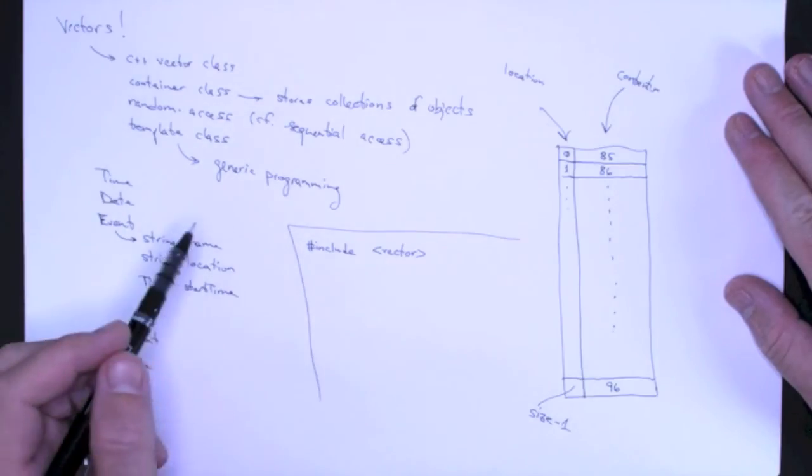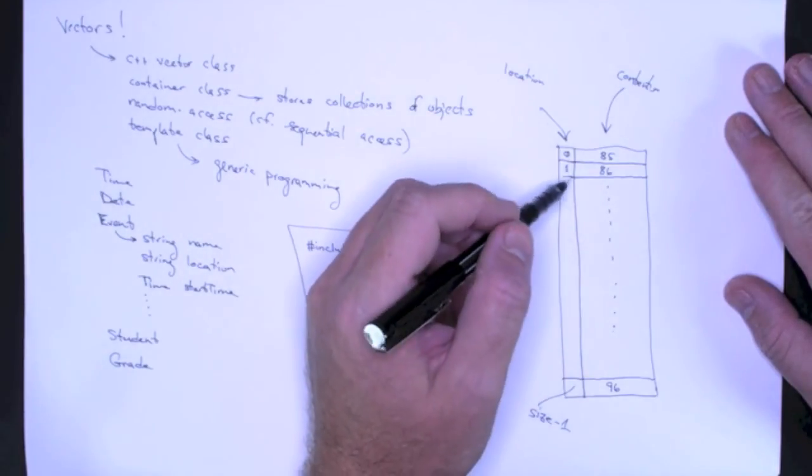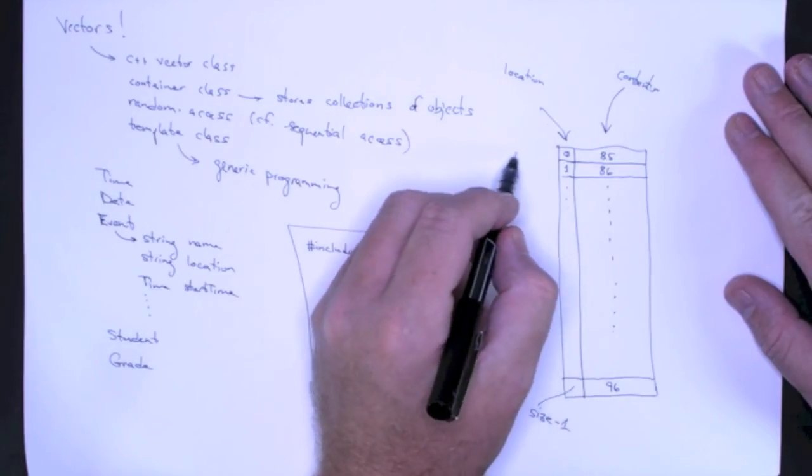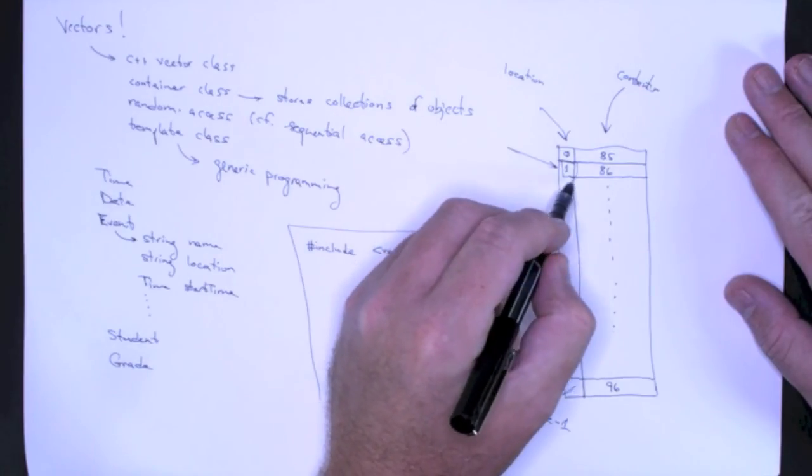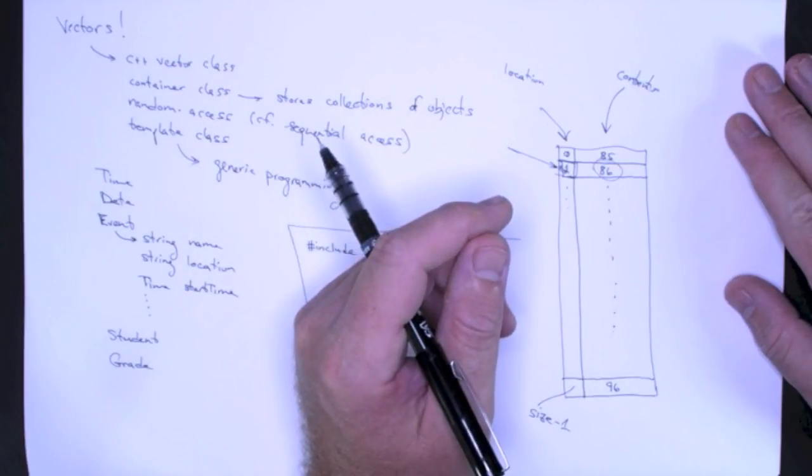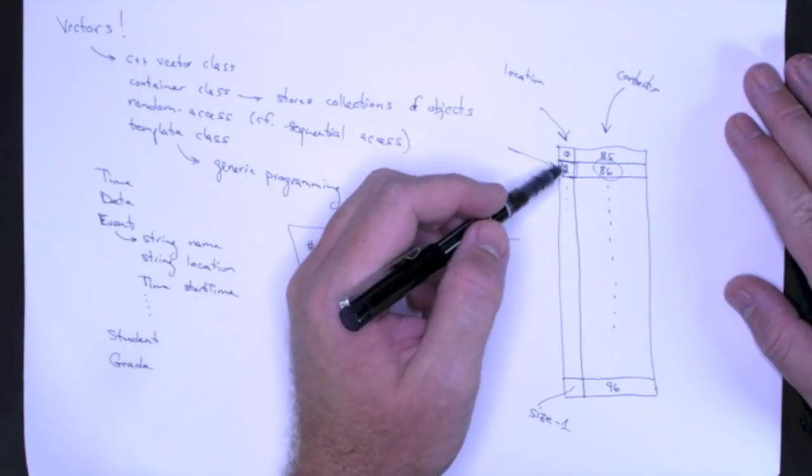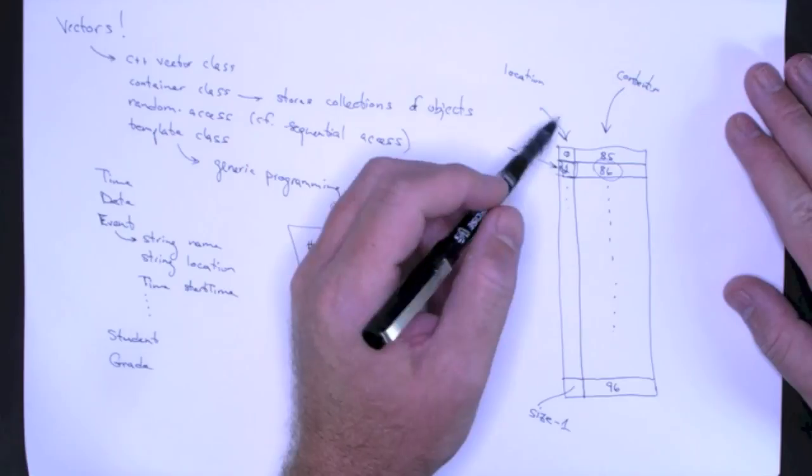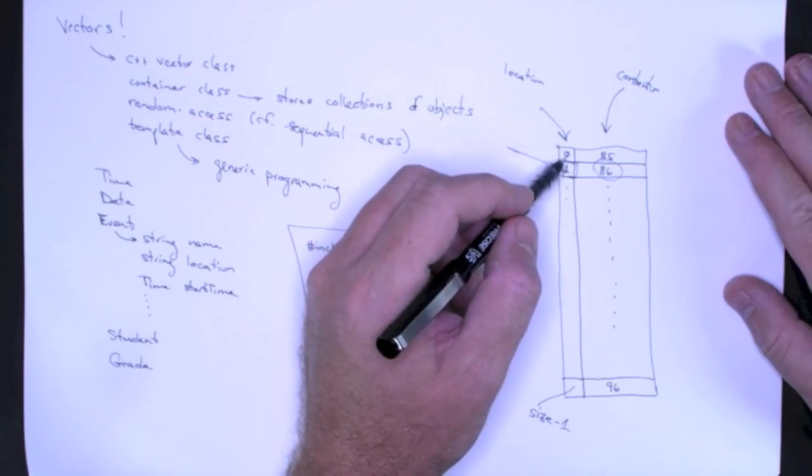And we'll look at the public interface of the vector class. But essentially, what I can do is I can refer to any element of this vector by simply specifying its location. And I can get access to 86. And as you can imagine, since I can refer to these locations using integers, actually they're unsigned integers.